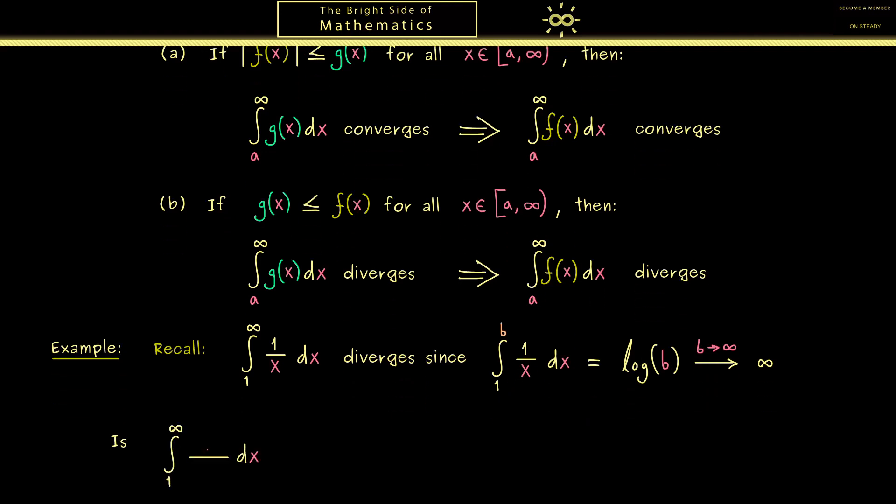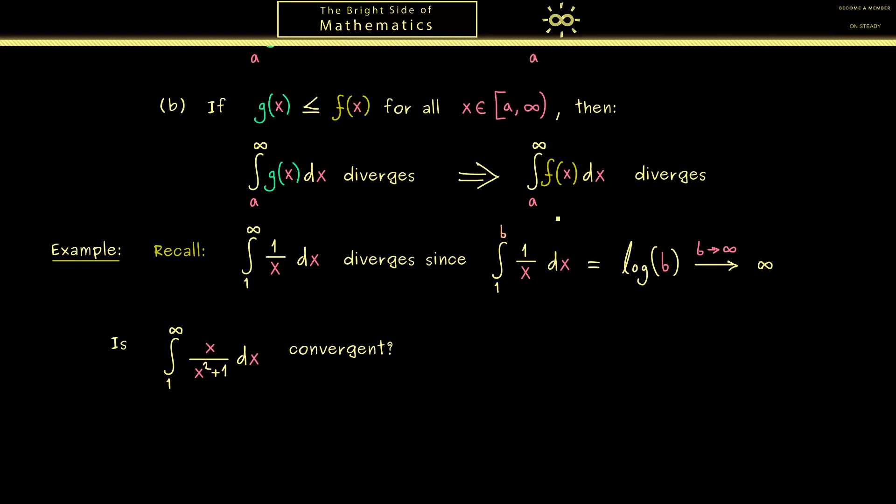So let's try it for the function x divided by x squared plus 1. So the question is, is this integral convergent or divergent? And from the things I said before, you might already guess we will show divergence. And indeed, you should see for a very large x, this function is almost 1 over x.